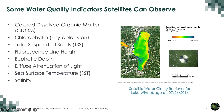Here is an example of satellite retrieval of water clarity for Lake Winnebago. You can see that water clarity near the coastal region is poor, but as you go toward the blue-green interior part, water quality is a little better.